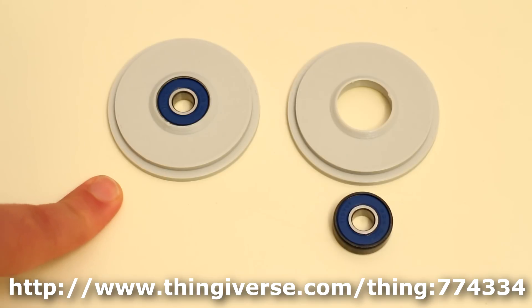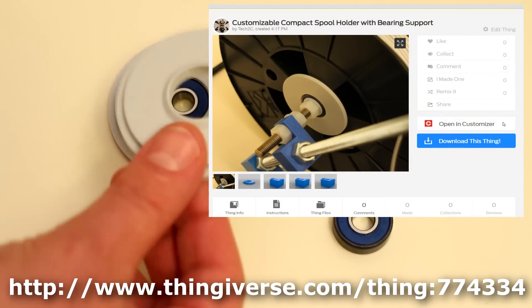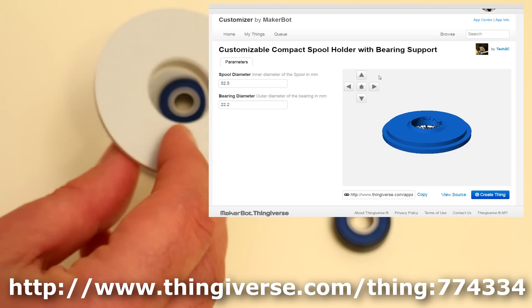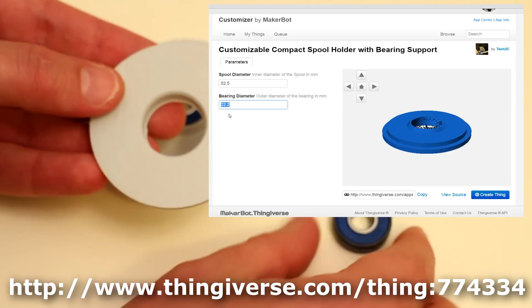I've also enabled the customizer option in Thingiverse and in customizer you'll be able to adjust two parameters before you generate the STL and print this out yourself. One is the actual diameter for the bearing.